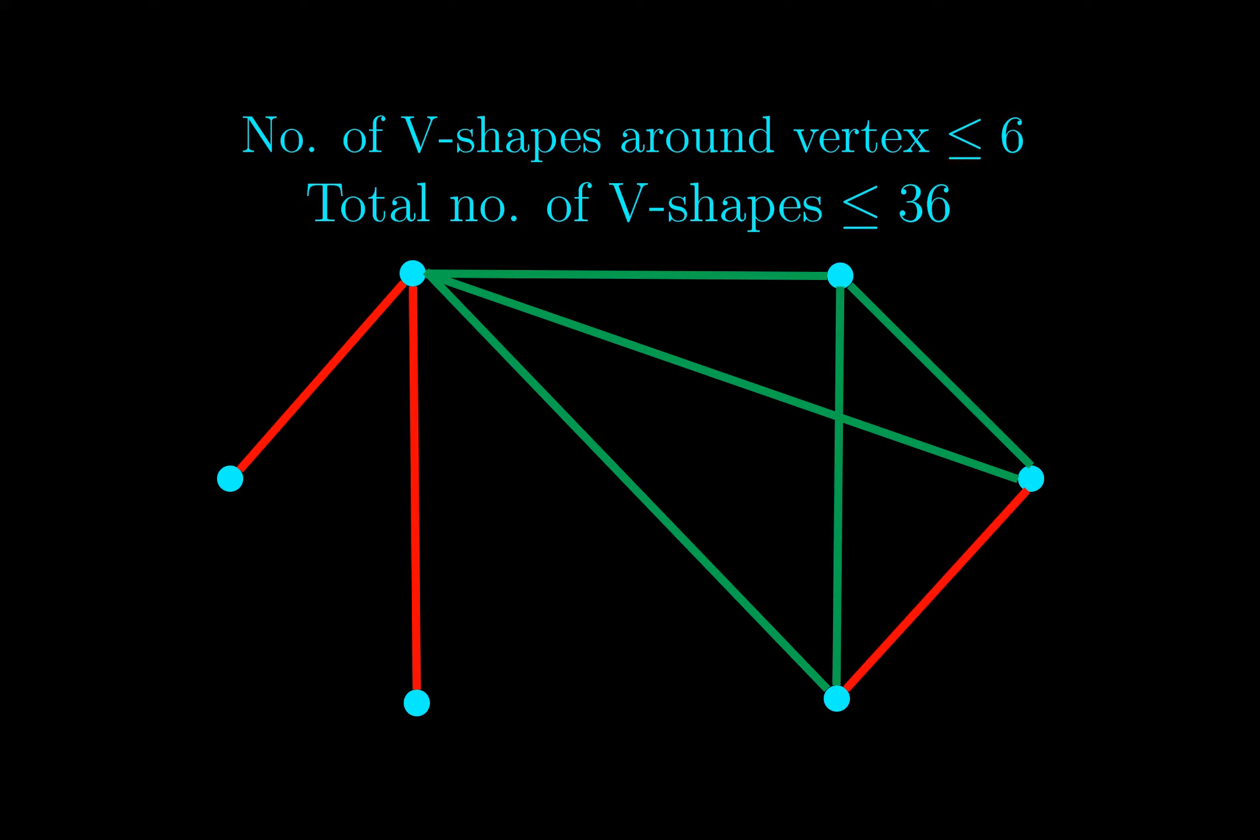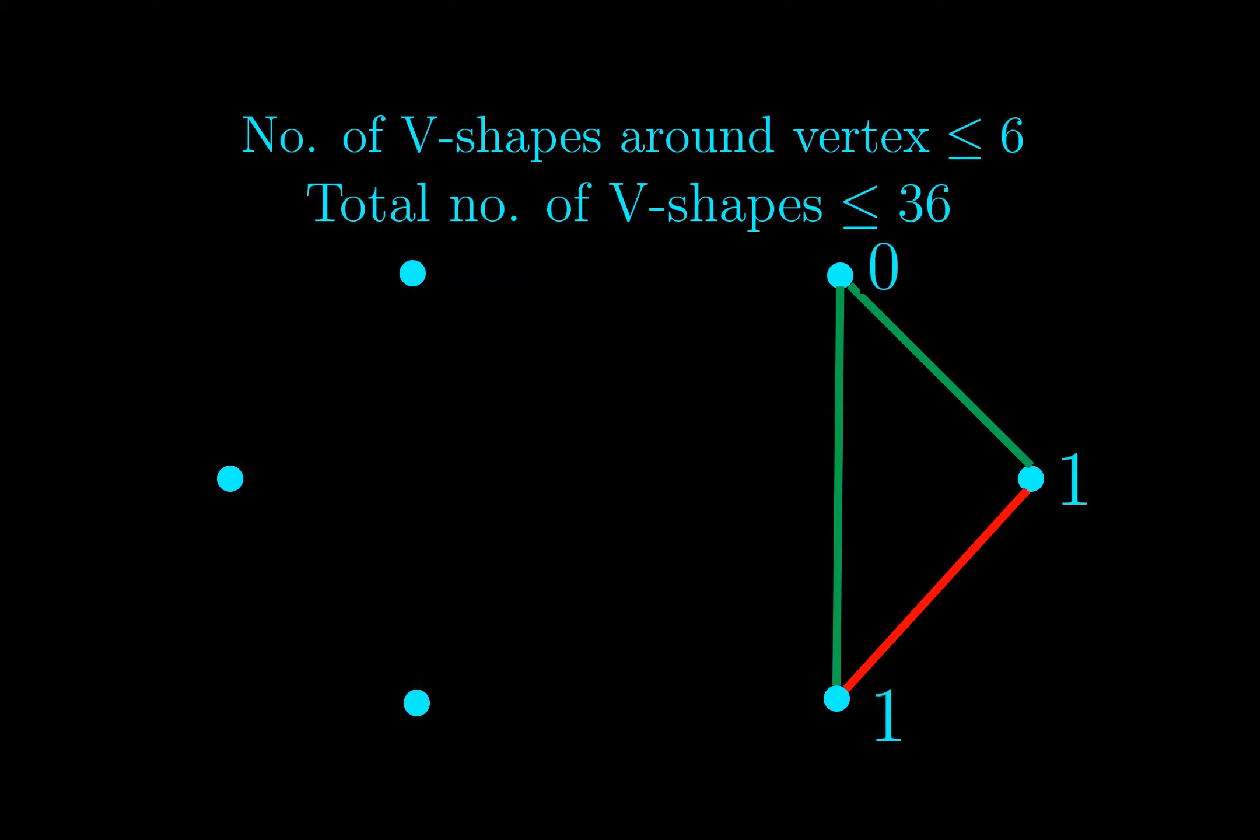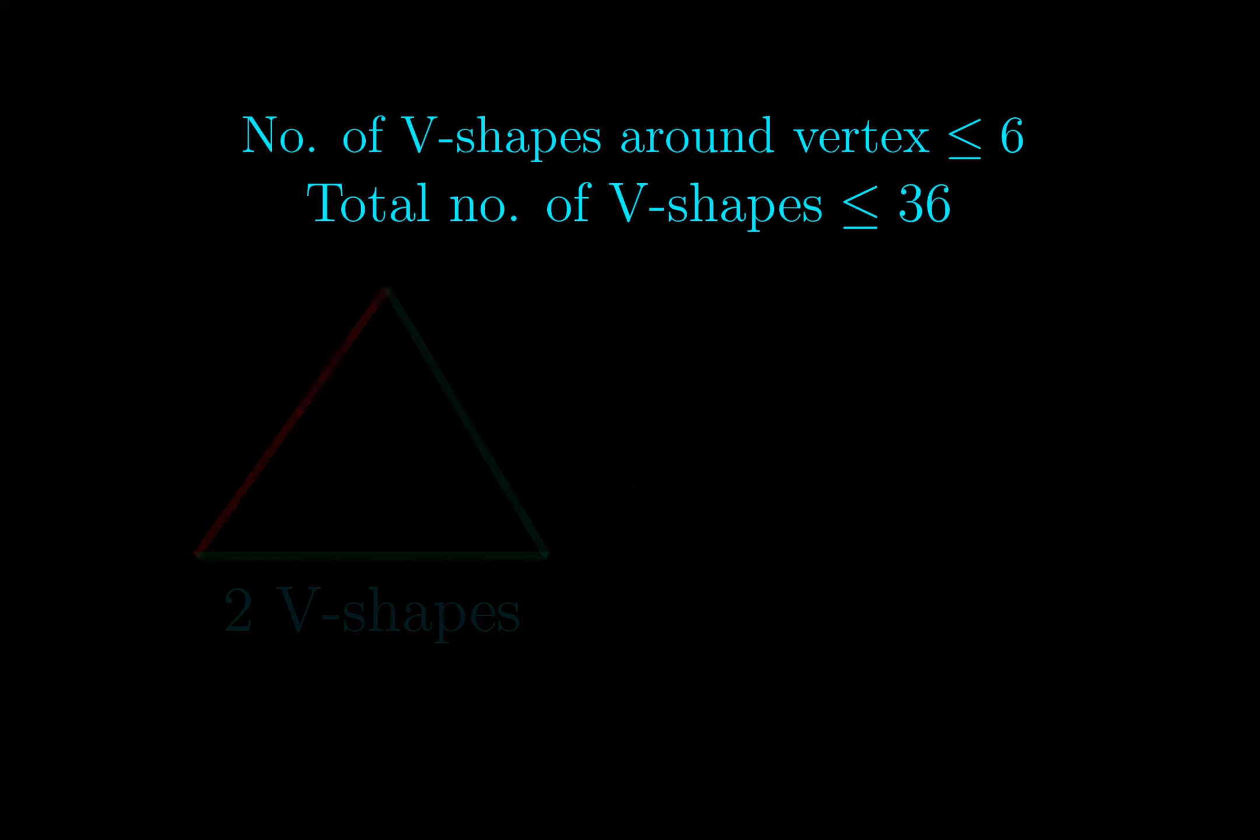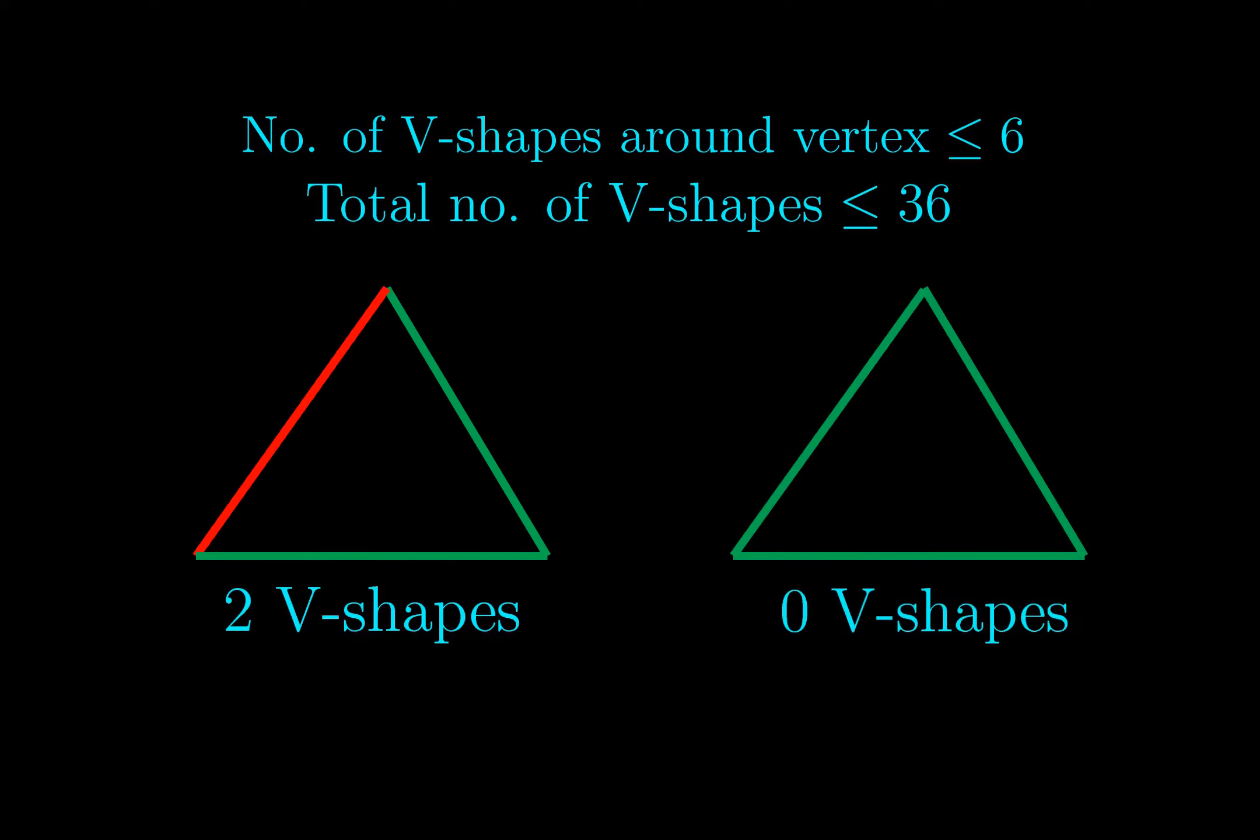Now in a triangle, it can either have an odd edge of different color, in which case there are 2 V shapes in a triangle, or all the edges in a triangle are of the same color, in which case there are no V shapes in a triangle. Now that we have proved that there are at most 36 V shapes in the whole graph, there are at most 18 triangles with 2 V shapes.